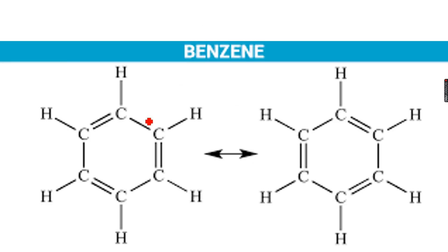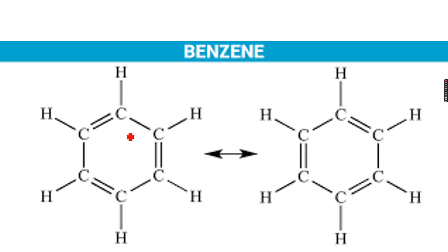So, benzene. These are two molecules that you see on the screen — these are molecules of benzene. As you can see, we have three carbon-carbon double bonds in the benzene molecule and three carbon-carbon single bonds. And if you also notice, these double bonds and single bonds are alternating.